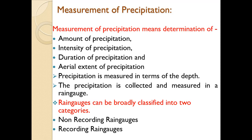Measurement of precipitation involves determination of the amount of precipitation, determination of intensity of precipitation, determination of duration of precipitation, and studying the aerial extent of the precipitation — the total area covered by precipitation. This measurement of precipitation is very important for various hydrological processes and hydrological parameter determination.